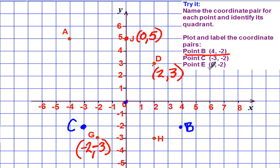And point E. Zero, negative two. So we don't need to go side to side. But then we go down two. And this will be point E.